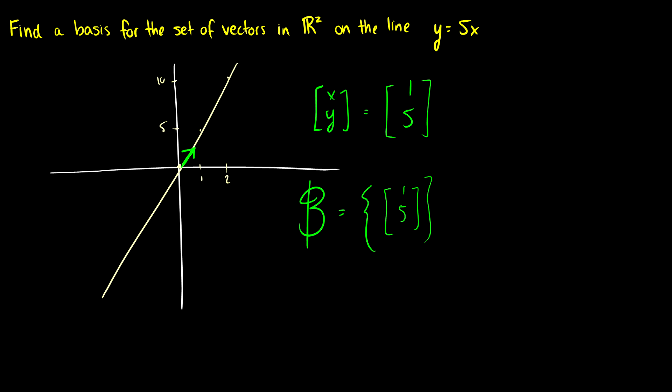If we want to talk about points on this line, why not use this basis? Instead of writing the point (2, 10) as 2e1 plus 10 times e2, we can just say it's 2 times the unit vector in this basis. This is more efficient, and may be easier for computations, abstract thinking, and computational geometry.